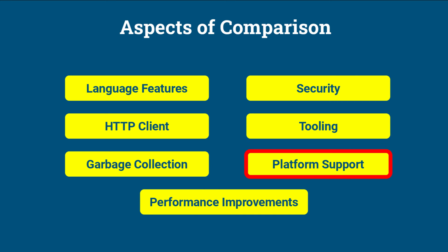Platform Support. Java 8 supported a wide range of operating systems and platforms. Java 11 continues to support a wide range of platforms, with updates and improvements to platform-specific features. Overall, Java 11 builds upon the features introduced in Java 8 and includes several new features, improvements, and enhancements that aim to improve developer productivity, simplify common tasks, and enhance the performance and security of Java applications.